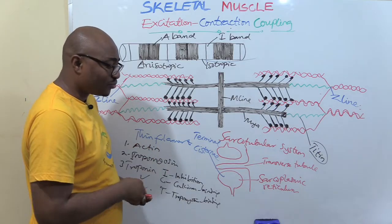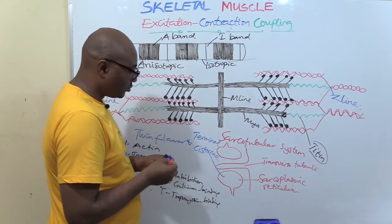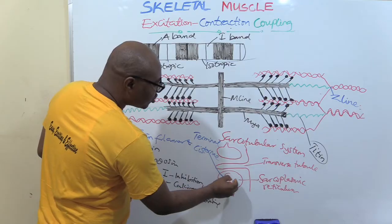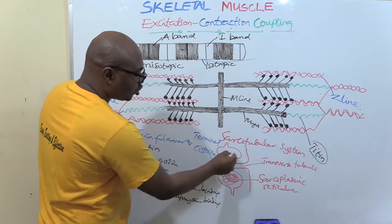The terminal cisternae stores a lot of calcium. It stores calcium.